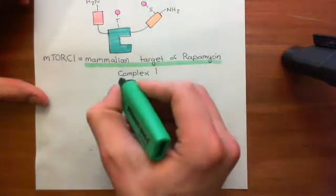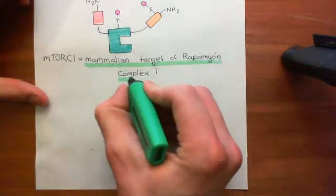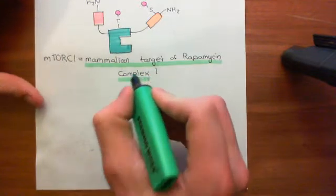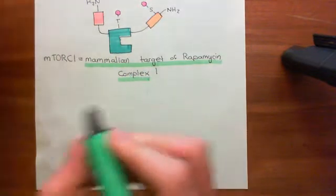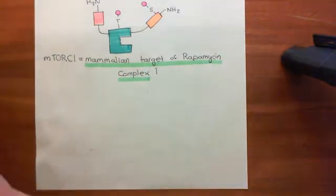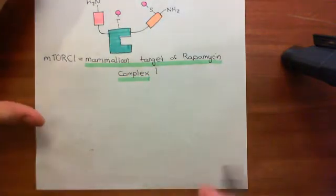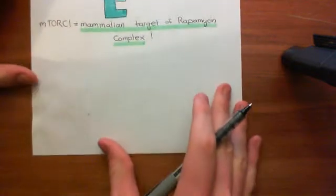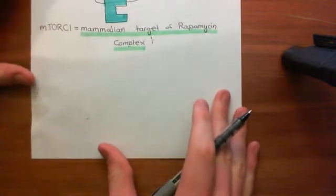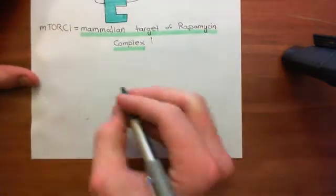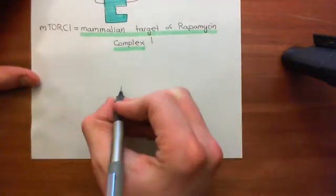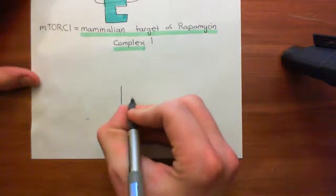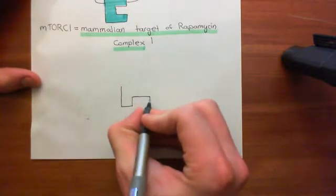mTORC1 is a large complex which is itself a serine-threonine kinase enzyme. One of the key proteins at the centre of the whole mammalian target of rapamycin complex 1 is the mammalian target of rapamycin itself.